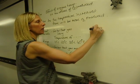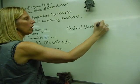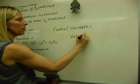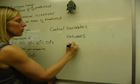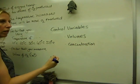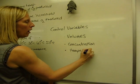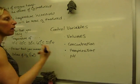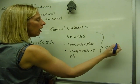From the independent, the range, and the dependent variable, we then go on to control variables. So this is what you may have heard of being called as a fair test, but we don't use that. We talk about the control variables. So it's factors that you're going to keep the same during your practical. This is normally volumes of any solution that you use.